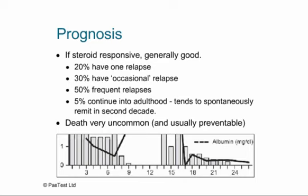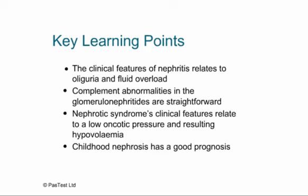Key learning points: the clinical features of nephritis relate to oliguria and fluid overload. Complement abnormalities in glomerulonephritides are fairly straightforward. Nephrotic syndrome's clinical features relate to low plasma oncotic pressure resulting in hypovolaemia. Finally, childhood nephrosis has a good prognosis.